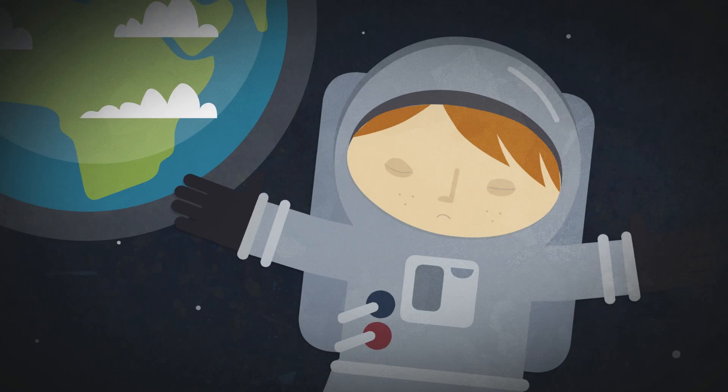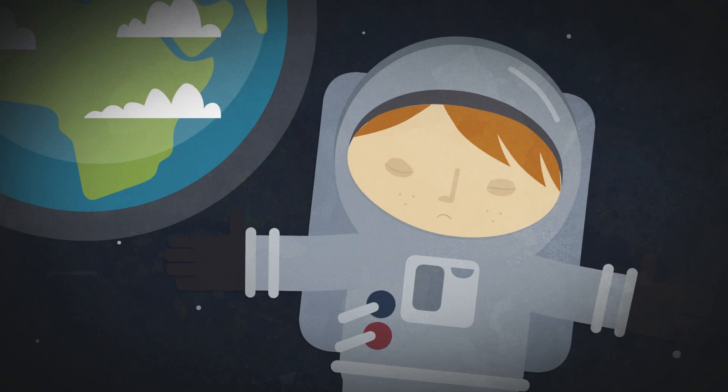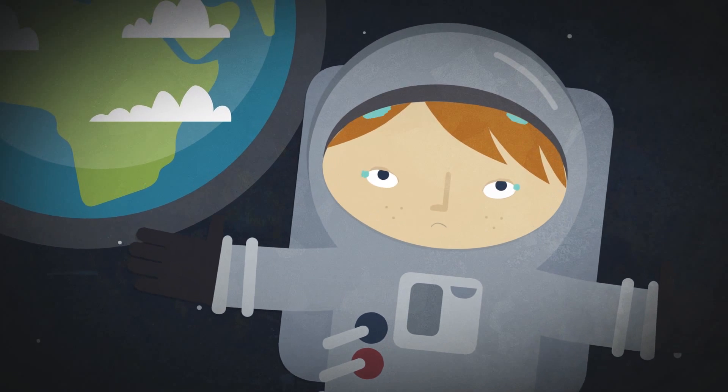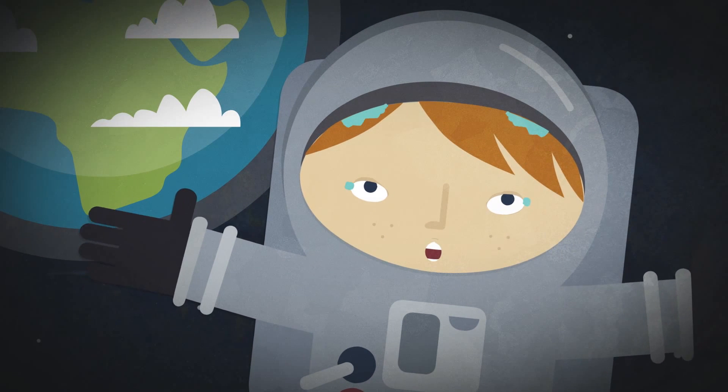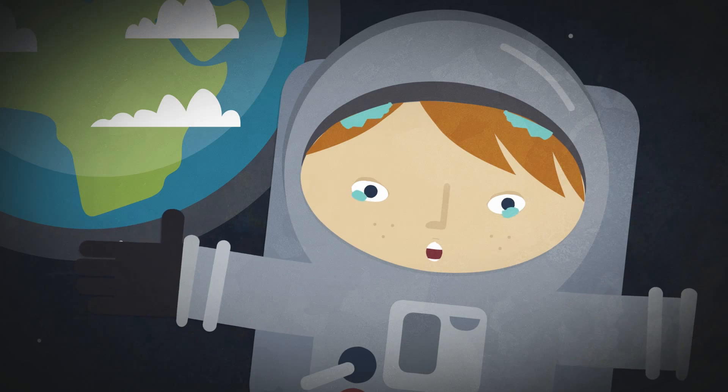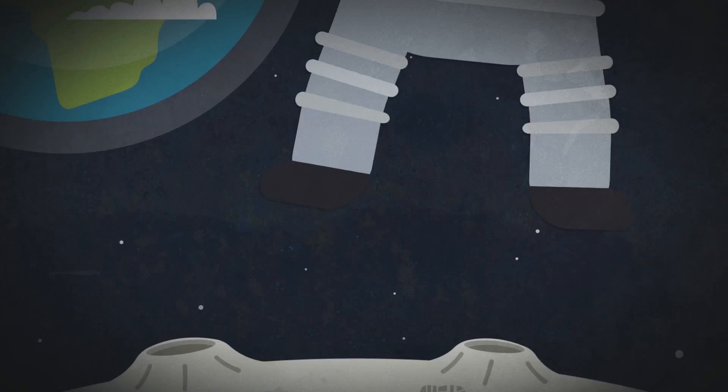In space, there's no gravity to pull things down, and that means that tears don't fall or flow. Instead, they float like watery bubbles or cling onto your face until little puddles form under your eyes. Has anyone got a tissue?